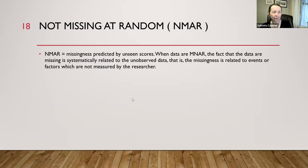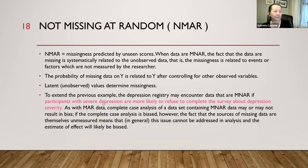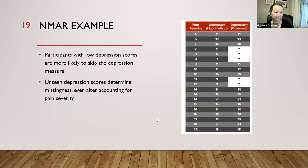Not missing at random is the worst case — when values are missing because of the values themselves. Participants with severe depression may be more likely to refuse completing a survey about their depression. That definitely leads to bias in analysis. In the example, participants with low depression scores are more likely to still have a depression measure — so values 11, 6, 7, 9, 9 are present — those with higher depression are the ones missing. That's NMAR.